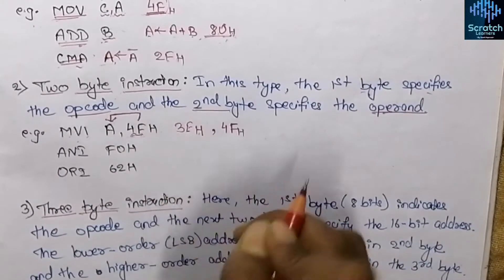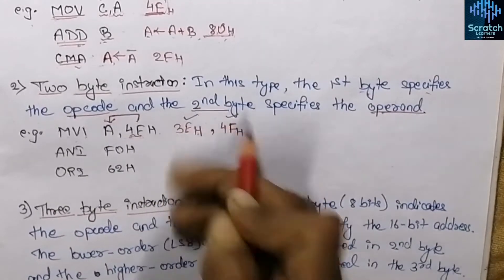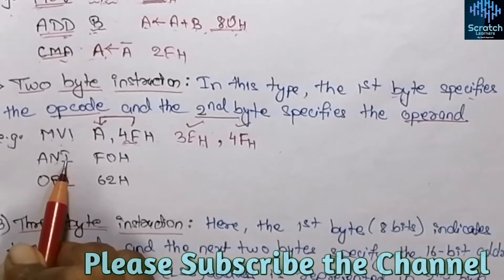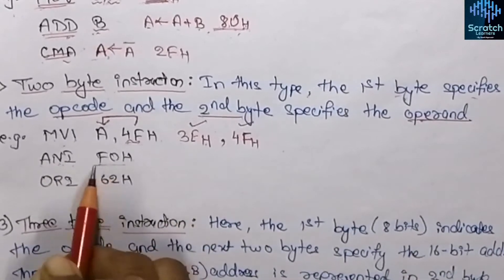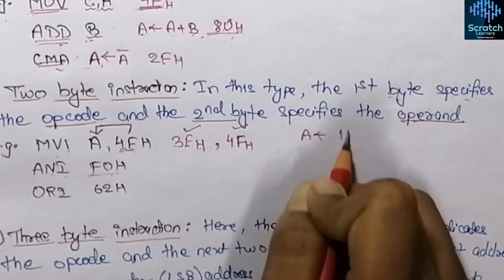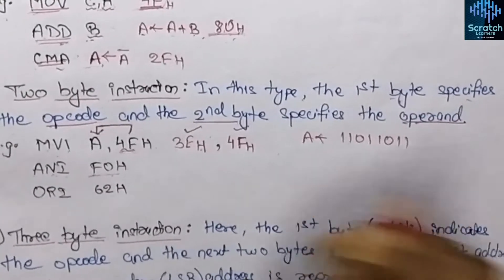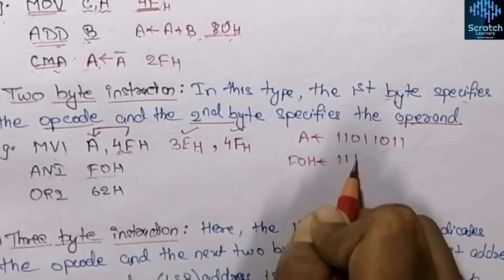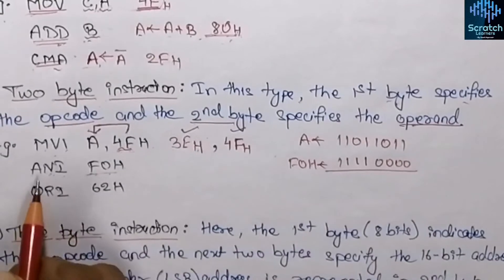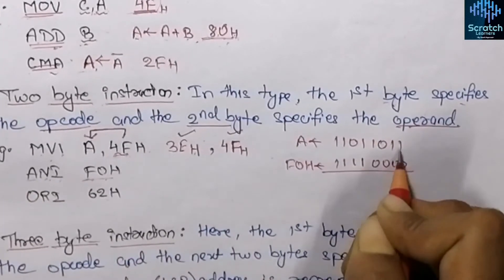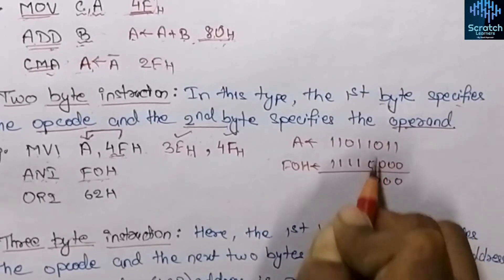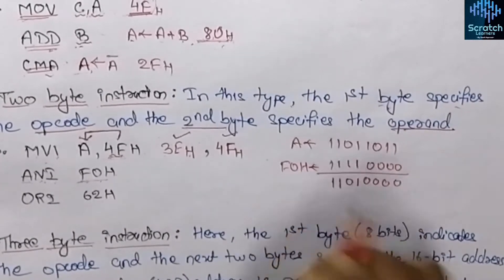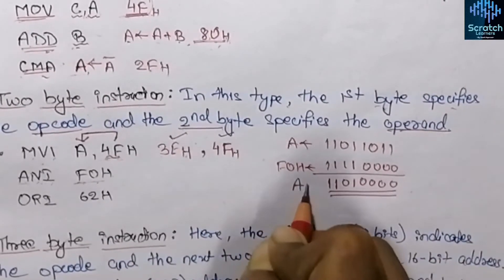The second byte specifies the operand — here the operand is 4F hex, so the second byte is occupied by 4F hex. This takes two bytes of memory. The next example is ANI F0 hex, used to perform logical AND between the content of the accumulator and data F0 hex. Writing F0 hex in binary gives 1111 0000. Performing AND operation bit by bit yields the result which is stored in the accumulator.